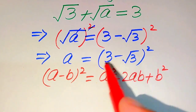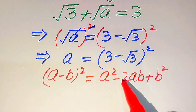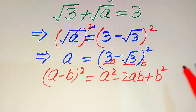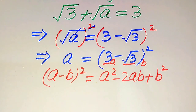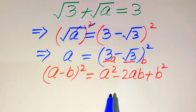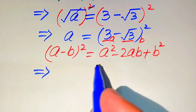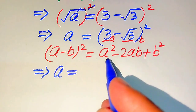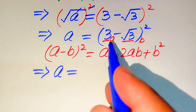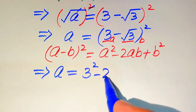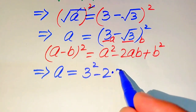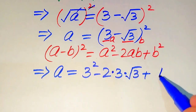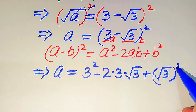We need these steps to write our answer in simplified form. Here, 3 is our 'a' and square root of 3 is our 'b'. We substitute these two values into the formula. After substituting, the equation is written as: a equals a squared, where the value of a is 3 squared, minus 2 times a times b, where a is 3 and b is square root of 3, plus b squared, where b is square root of 3 squared.